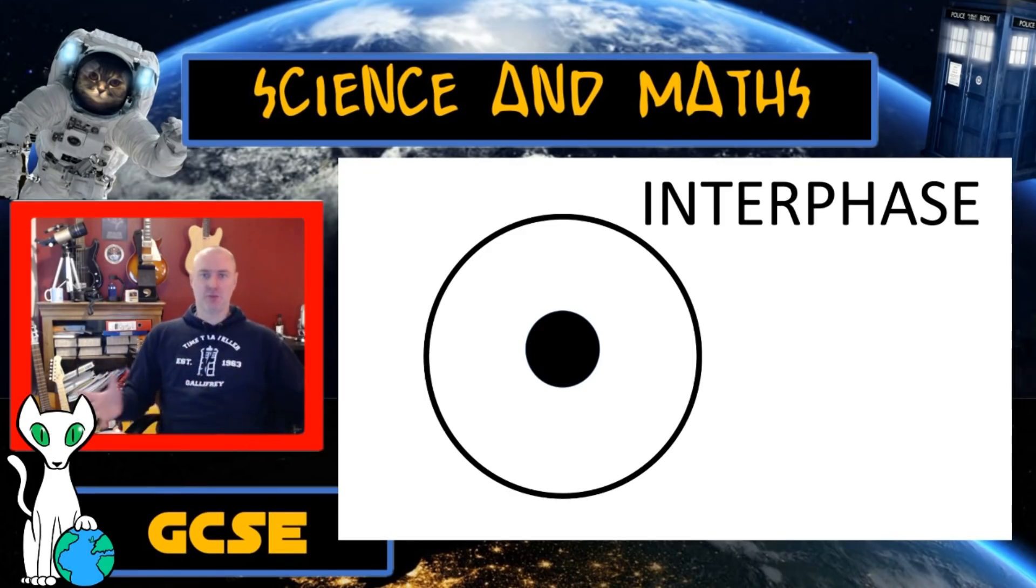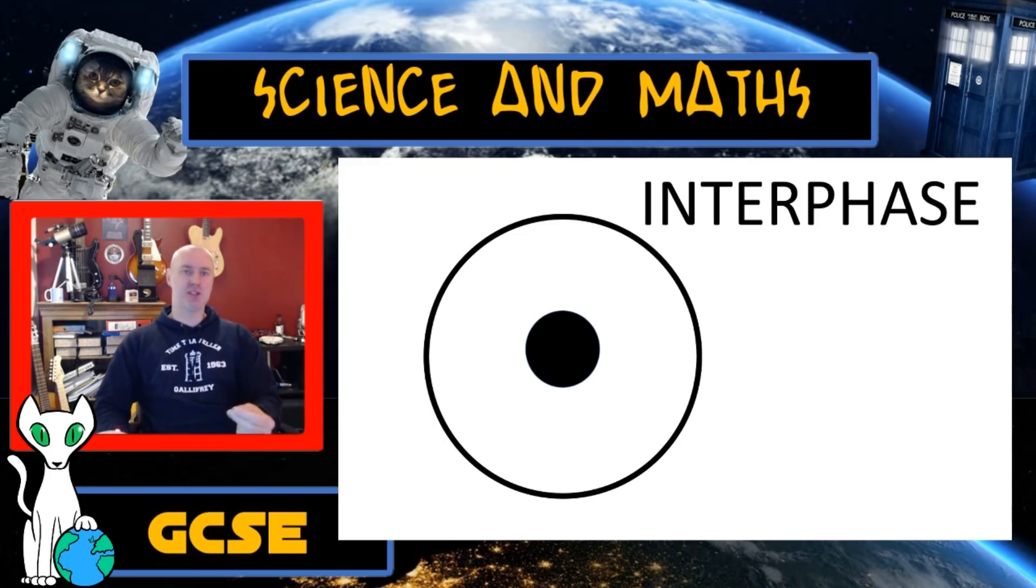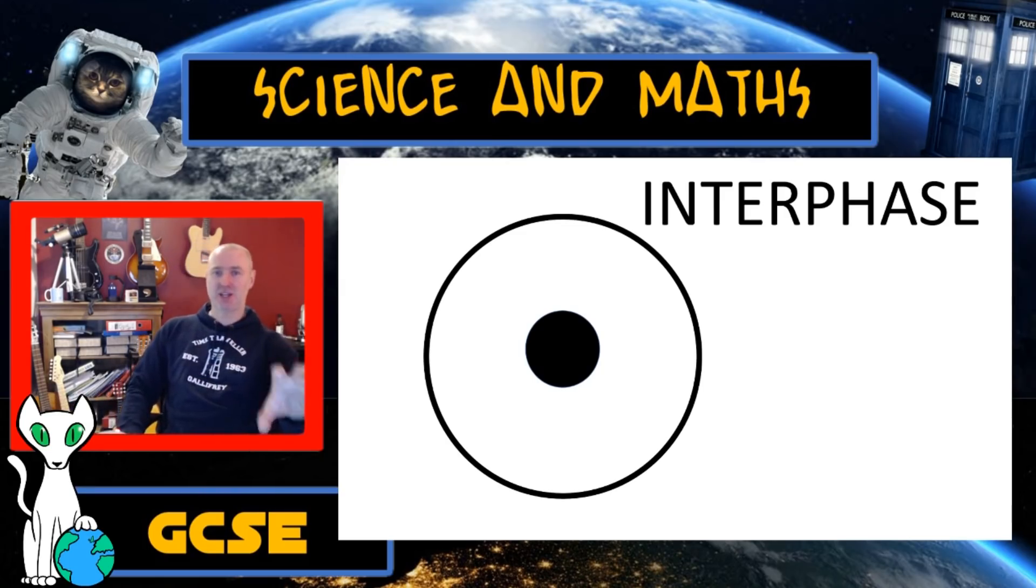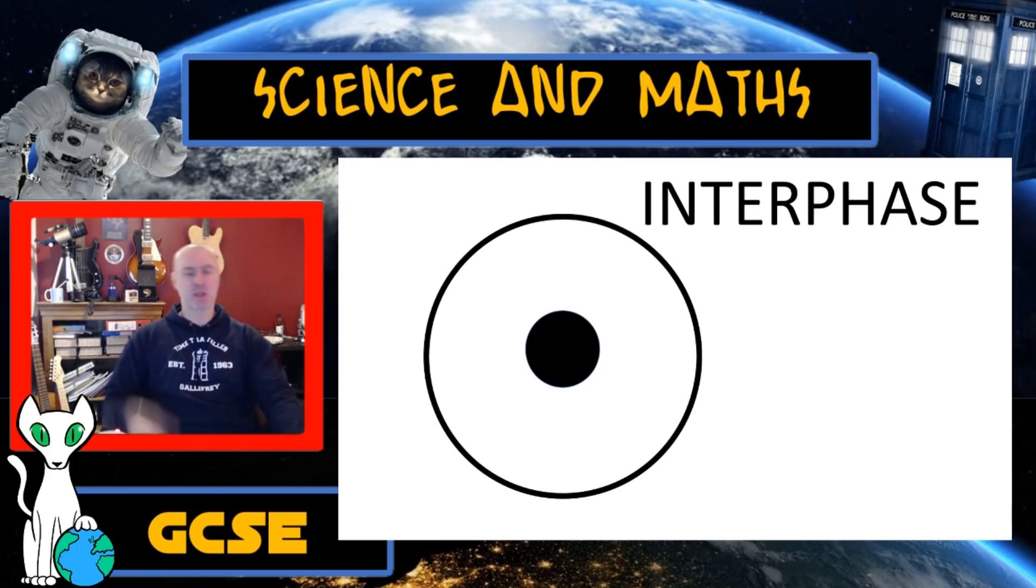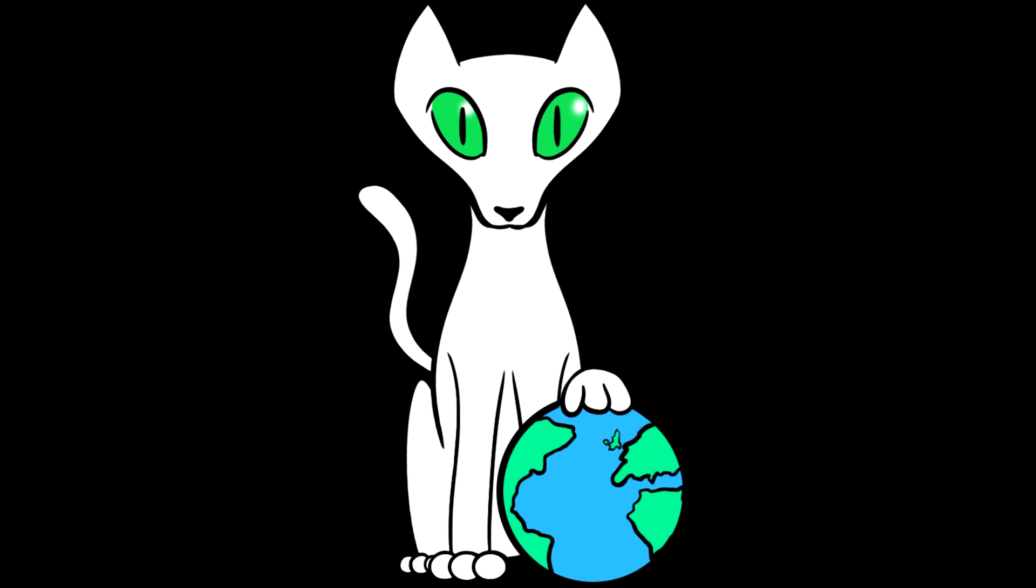Now, these chromosomes, these sister chromatids, are useless while they're stuck in that nucleus. We want to have 46 of them at the top of the cell and 46 at the bottom so we can start packaging them in new nuclei and making two new cells. At the minute, being stuck in that nucleus isn't doing them any favours. So to summarize, interphase is where we copy the genetic material.